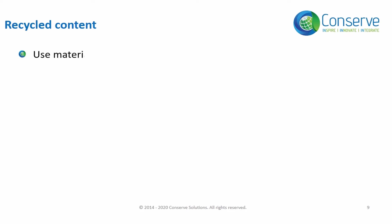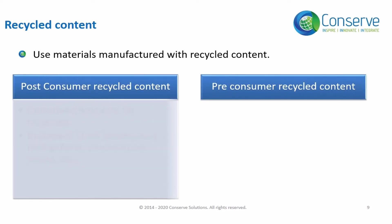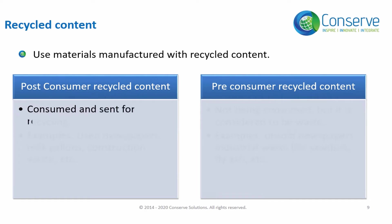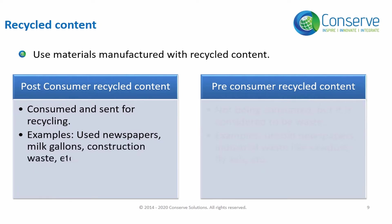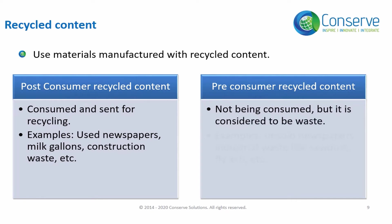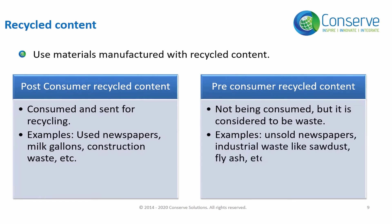The next strategy is to use materials manufactured with recycled content. Recycled content can be of two types: post-consumer recycled content and pre-consumer recycled content. Post-consumer recycled materials are materials which have been consumed and sent for recycling — examples include used newspapers, milk jugs, and construction waste. Pre-consumer recycled materials are materials which have not been consumed but are considered waste — examples include unsold newspapers and industrial waste like sawdust and fly ash.